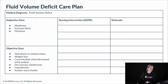Some other things you'll see: extreme thirst in these patients, alteration in their mental status, decreased urine output, dry mucous membranes, and sunken eyes and cheeks.